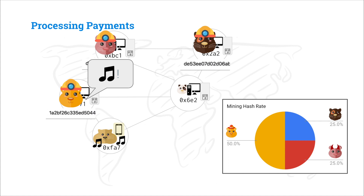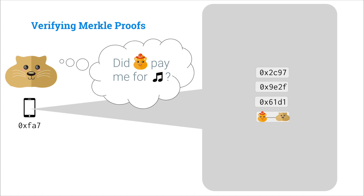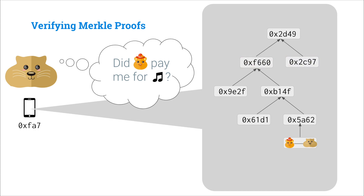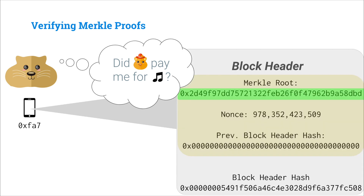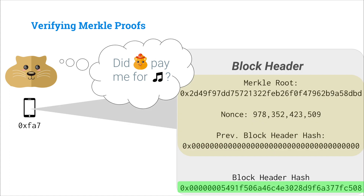Let's run this scenario again. Alice wants to buy some music from Tan Gerbil, so rather than sending thousands of transactions, she'll just send Tan Gerbil this one transaction and three hashes. Tan Gerbil will hash the transaction to get 5A62, hash those two hashes together to get B14F, hash those to get F660, and hash those two hashes together to get 2D49. Tan Gerbil then checks that 2D49 is in fact the Merkle root in the block header — which checks out. Then Tan Gerbil does one more hash of this Merkle root together with the nonce and the previous block hash to verify that the block header hash is valid and has enough leading zero bits.